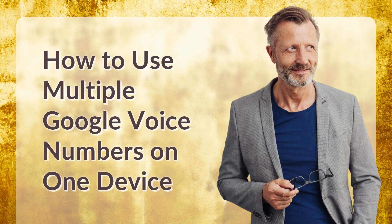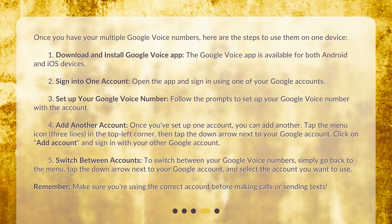Once you have your multiple Google Voice Numbers, here are the steps to use them on one device. Step 1: Download and install the Google Voice App. The Google Voice App is available for both Android and iOS devices. Step 2: Sign into one account. Open the app and sign in using one of your Google Accounts. Step 3: Set up your Google Voice Number. Follow the prompts to set up your Google Voice Number with the account.